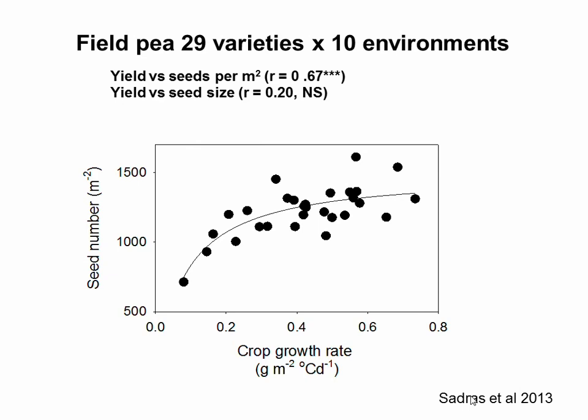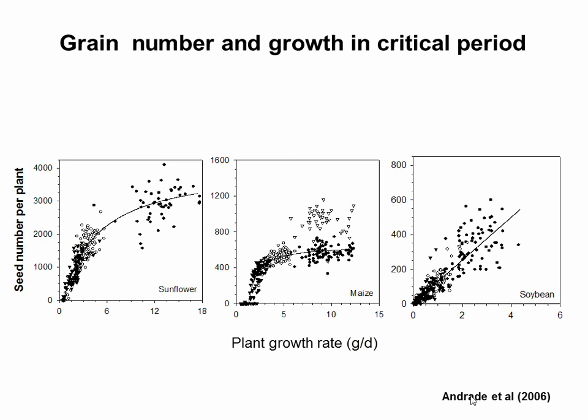A field study with 29 varieties across 10 environments confirmed that yield is related to seed number and unrelated to seed size, and seed number is related to the growth rate of the crop in the window when grain number is set. This pattern holds for maize as well — growth rate of the plant and number of grains set per plant show a clear relationship. For each crop there's a critical window, possibly slightly earlier or later, but the growth rate — how healthy the crop is and how well it captures resources — is what drives grain number and eventually yield. Prolific maize hybrids can produce a second cob under good conditions.